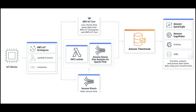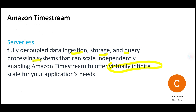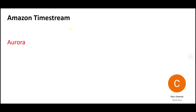Similarly, if QuickSight has 100 concurrent users firing queries, Timestream can handle that. And if concurrent users increase to 10,000, Timestream would automatically scale up — specifically scaling up the query processing system — so that your queries run faster.